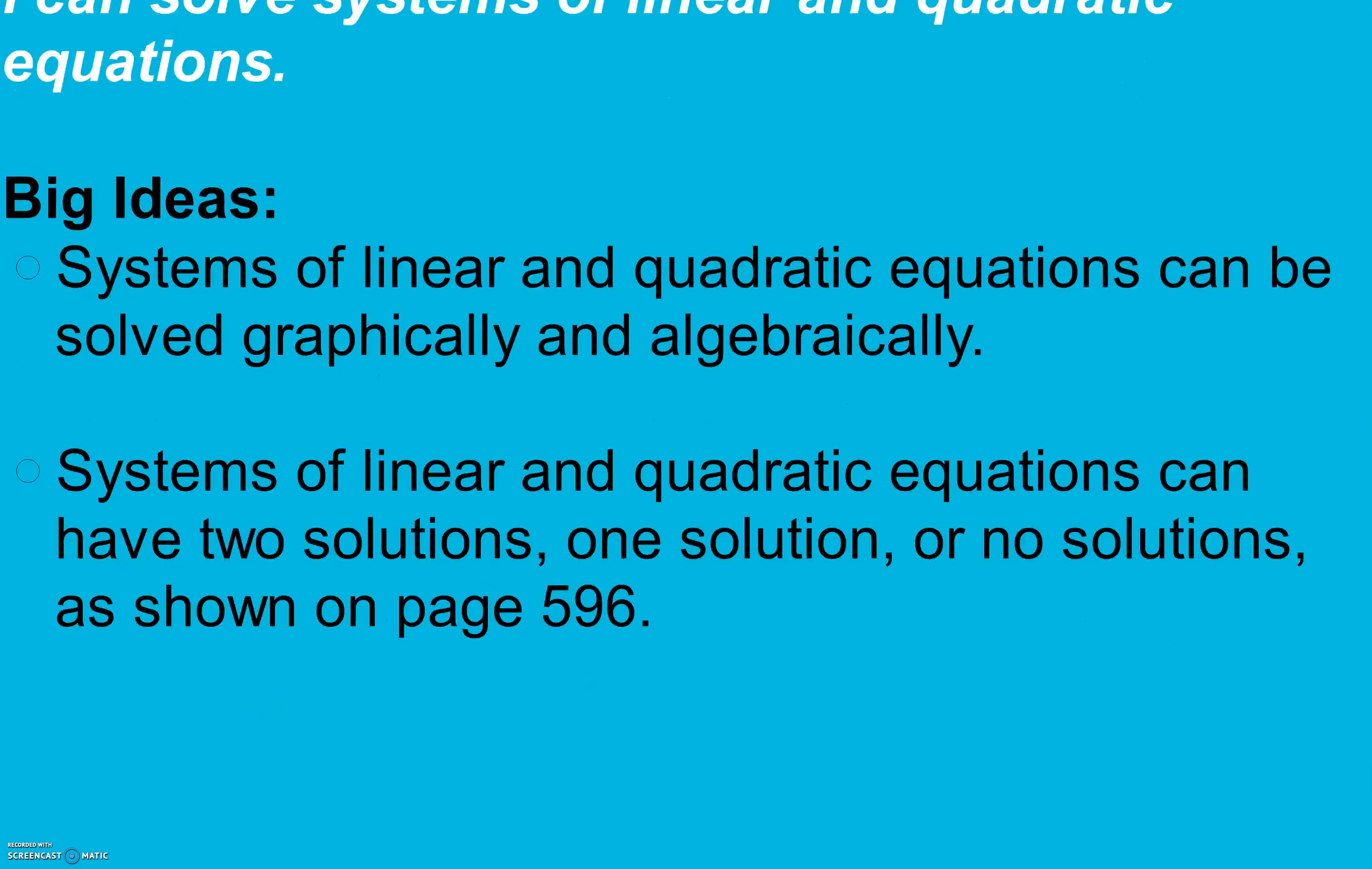Big ideas here. Systems of linear and quadratic equations can be solved graphically and algebraically. Systems of linear and quadratic equations can have two solutions, one solution, or no solutions and that's shown on page 596. In the first one where there's two solutions, we have a parabola and the line intersects it. So we have two solutions, two points of intersections.